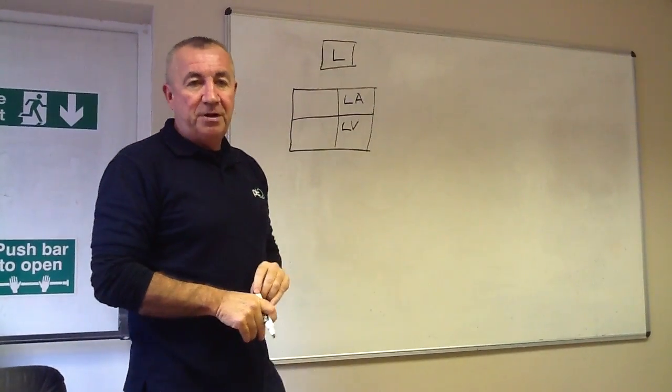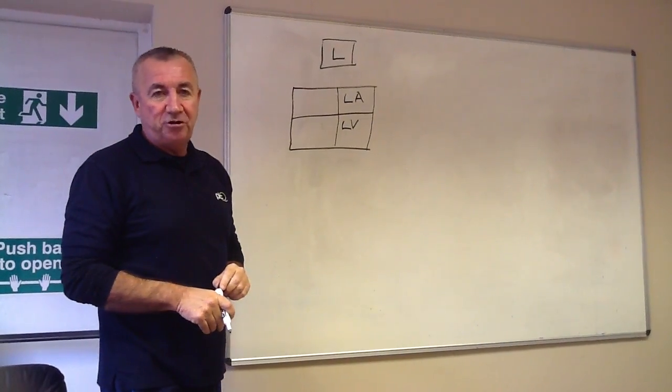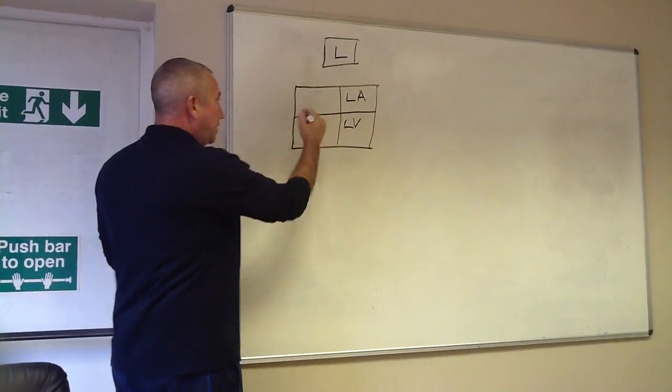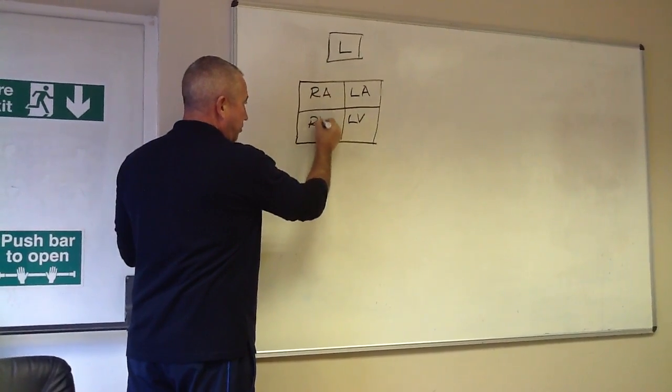So the LA stands for left atrium. You can make a note of that. And the LV represents left ventricle. So on the other side therefore we have the right atrium and the right ventricle.